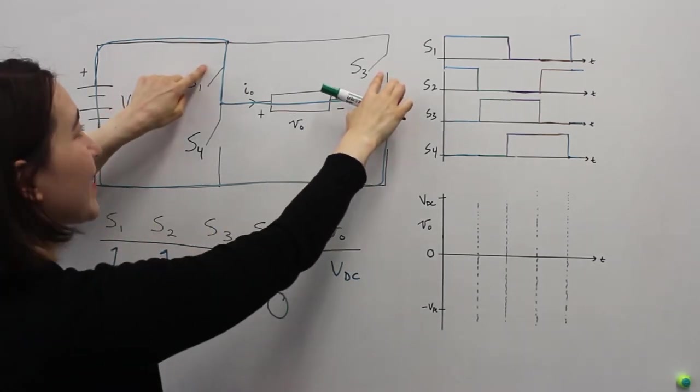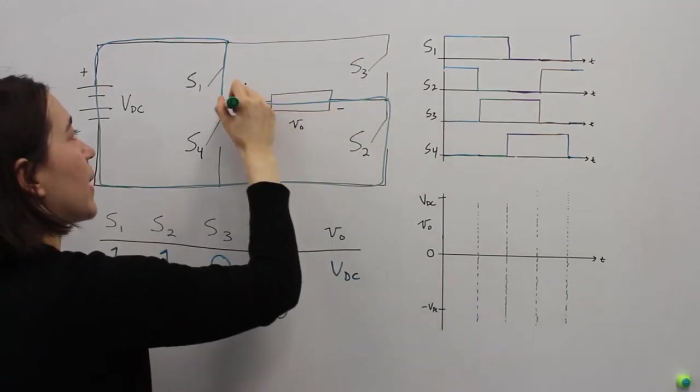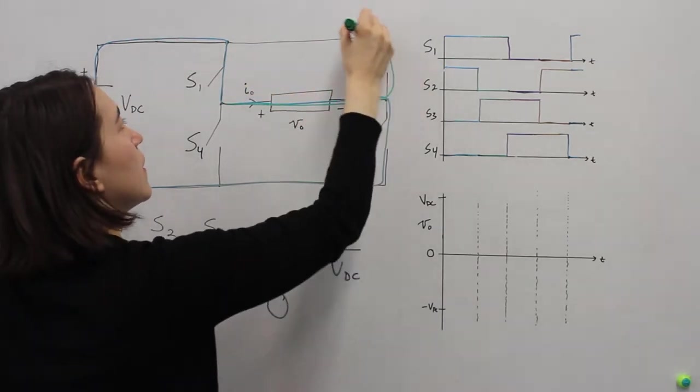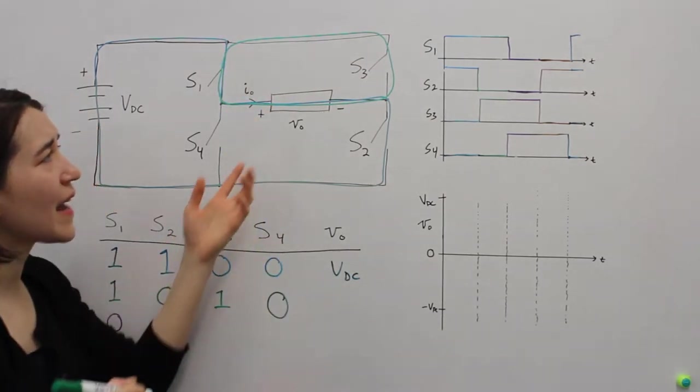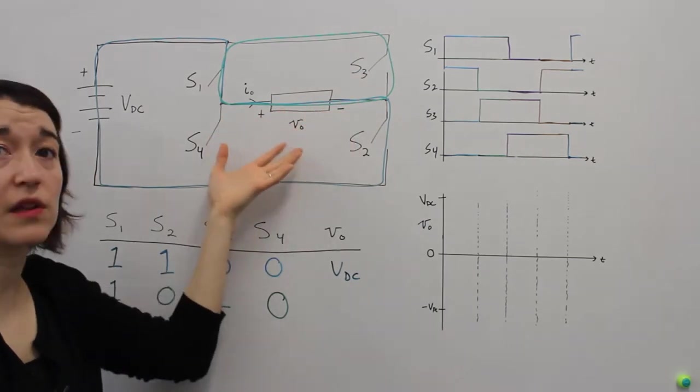So these two are on. That's actually closing this loop. So here's our current path for this one. This is actually 0 volt. This is shorting around the load.